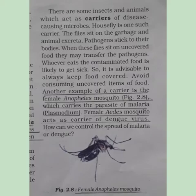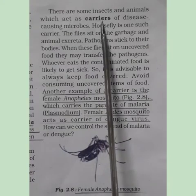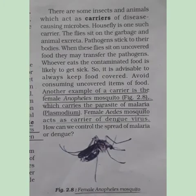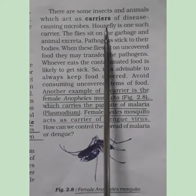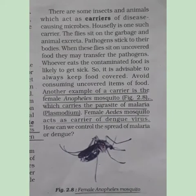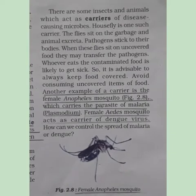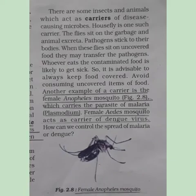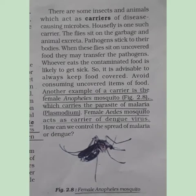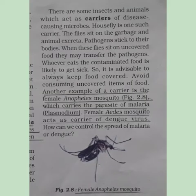It is better to keep distance from infected persons. Some insects and animals act as carriers of disease-causing microbes. For example, the house fly is one such carrier. Flies sit on garbage and animal excreta, and pathogens stick to their bodies. When these flies sit on uncovered food, they may transfer pathogens into the food. We must always keep food covered and avoid consuming uncovered food items.